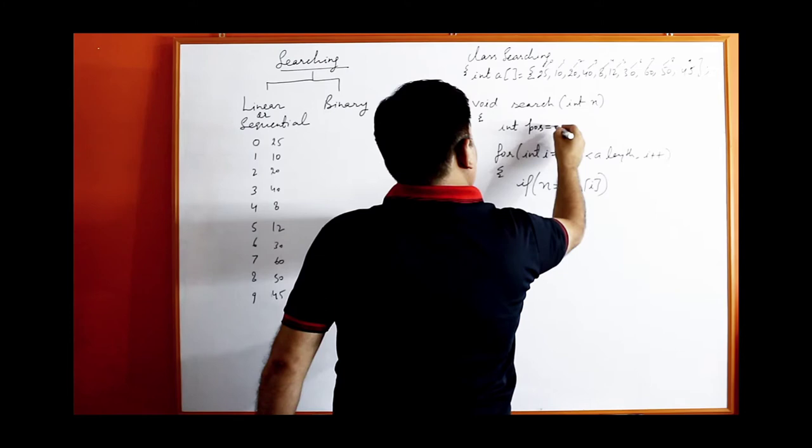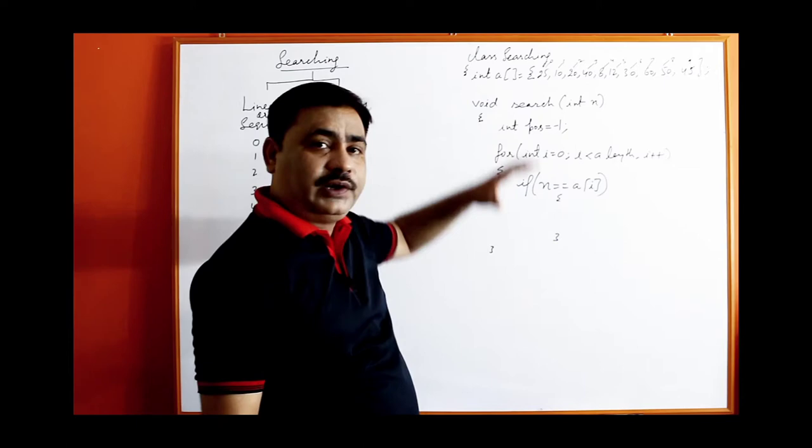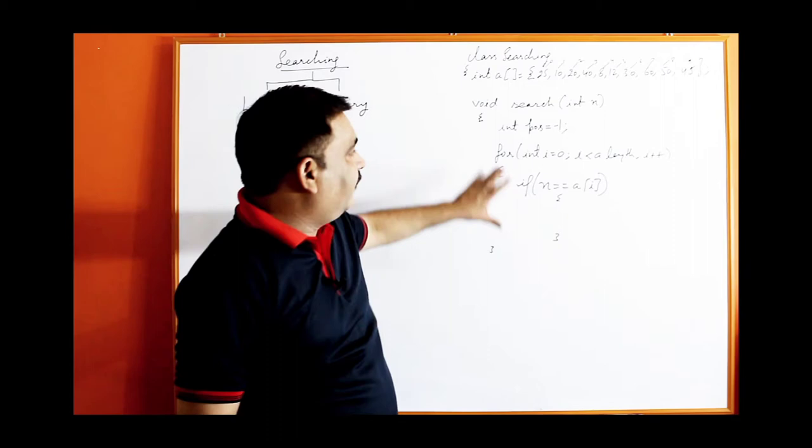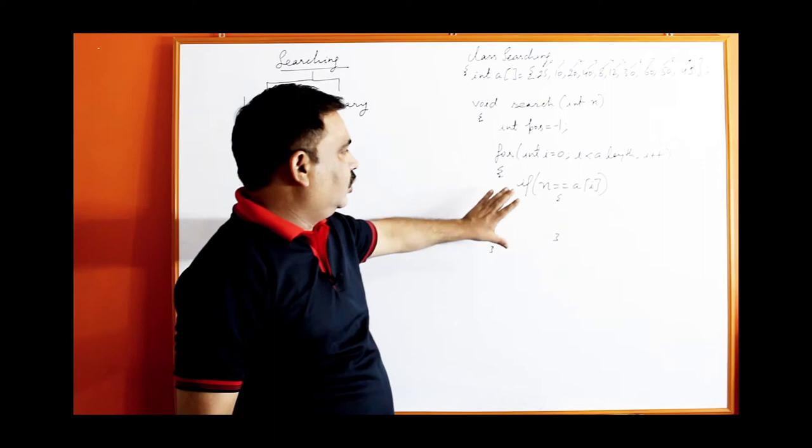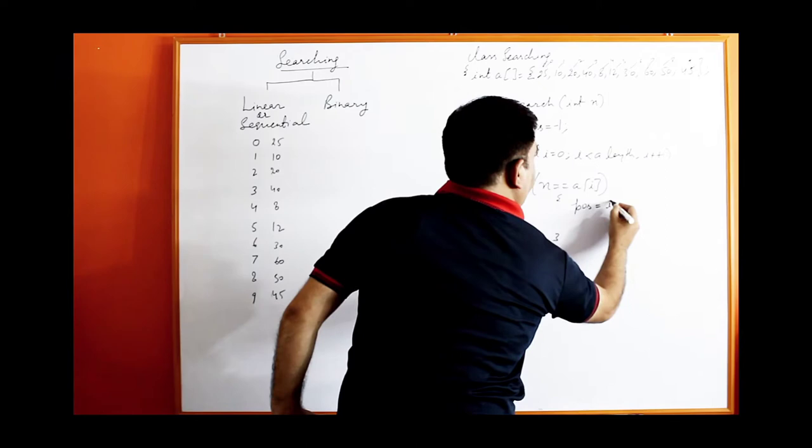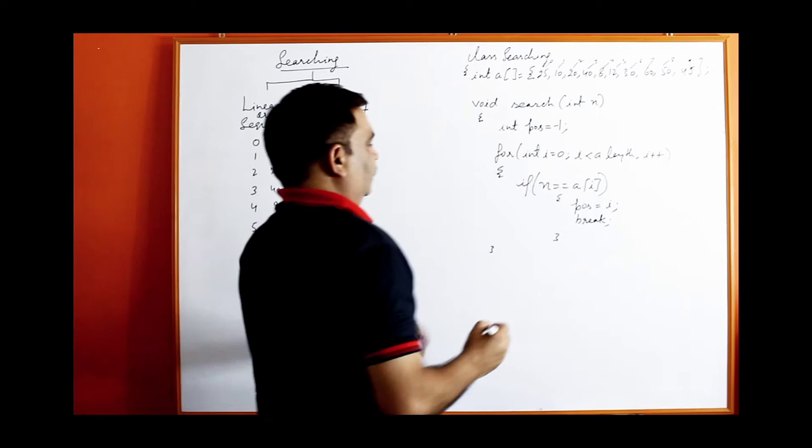Initially I have taken pos equal to minus 1, because if the value does not exist in the whole array, the value of pos will remain minus 1. If the value is present, pos will be initialized with that index. Within this loop, if the value is present, change the value of pos to i and terminate the loop.